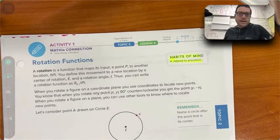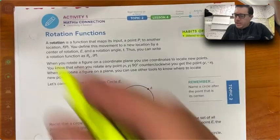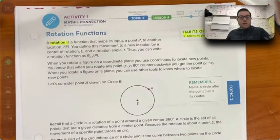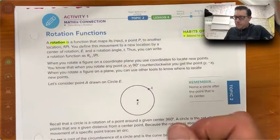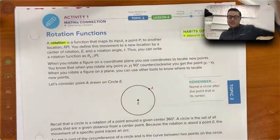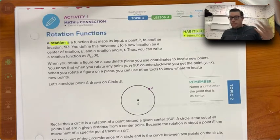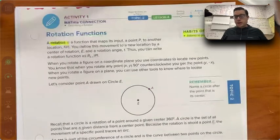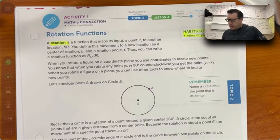Habits of mind, attending to precision. A rotation is a function that maps its input to another output, and we saw that in our first and second examples about the points moving to new spots. They were rotated.